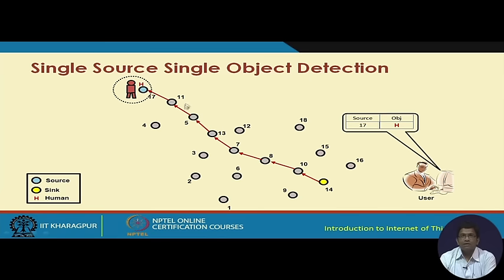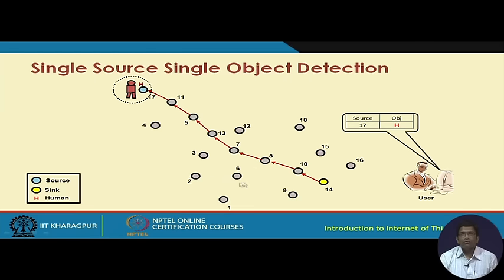In sensor networks, different sensor nodes are deployed in a particular region and communicate via multi-hop communication. Let us consider a surveillance application where it is required to detect objects. In this figure, sensor node seventeen detects a human object and that information through a multi-hop path is sent to the sink node fourteen, where a user is continuously monitoring which sensor has detected any human object.